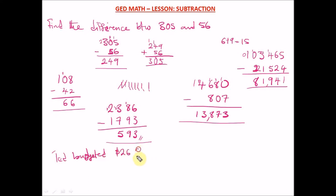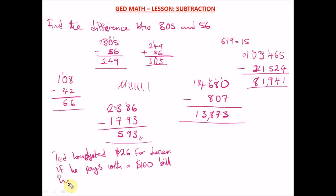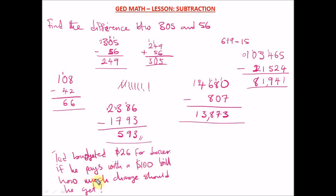Now let's solve a word problem on subtraction. Ted projected $26 for dinner. If he pays with a $100 bill, how much change should he get? This is straightforward — you subtract 26 from 100 to find the change.